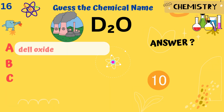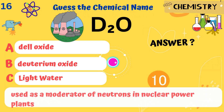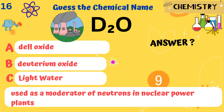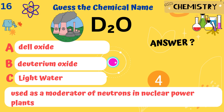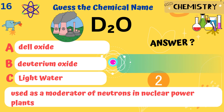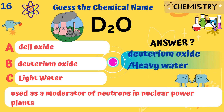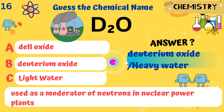It is used as a moderator of neutrons in nuclear power plants. Answer: Deuterium oxide, also known as heavy water.